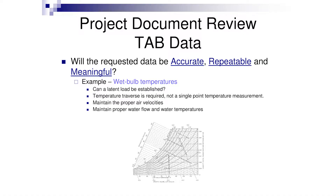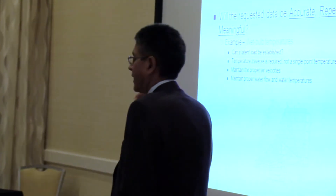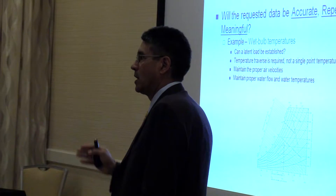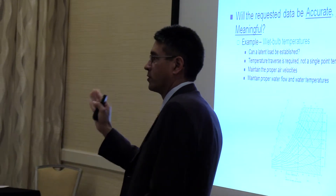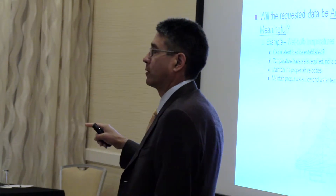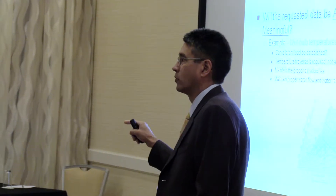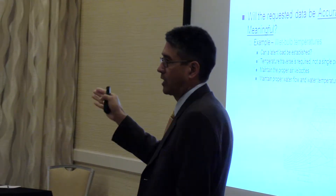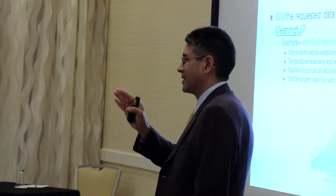When we start thinking about meaningful and accurate data, a good example is wet bulb temperatures. If we need to get wet bulb temperatures off that cooling coil, we have to step back and say: can I establish a latent load on that coil? When I start taking leaving air temperatures and wet bulb temperatures, it needs to make sense and correlate back to the design parameters of the coil. Is the chilled water coming in at steady state — 42 degrees or whatever our design water temperature is?